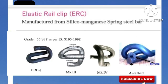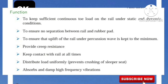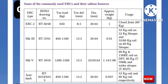Elastic Rail Clip (ERC) is manufactured from Silico-Manganese spring steel bar. Functions of ERC: to keep sufficient continuous load on the rail under static and dynamic conditions; to ensure no separation between rail and rubber pad; to ensure that uplift of the rail under the passing wave is kept to a minimum; provide creep resistance; keep contact with rail at all times; distribute load uniformly; prevent crushing of sleeper seat; absorb and damp high-frequency vibration. Please refer the table for more details about the ERC and their salient features.